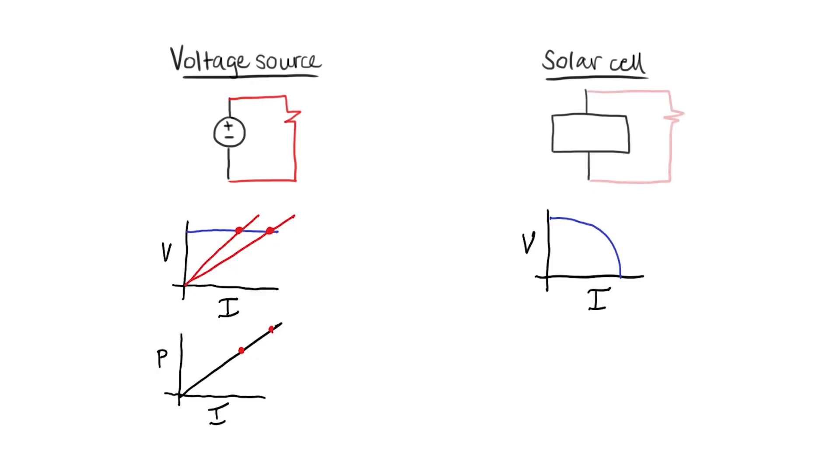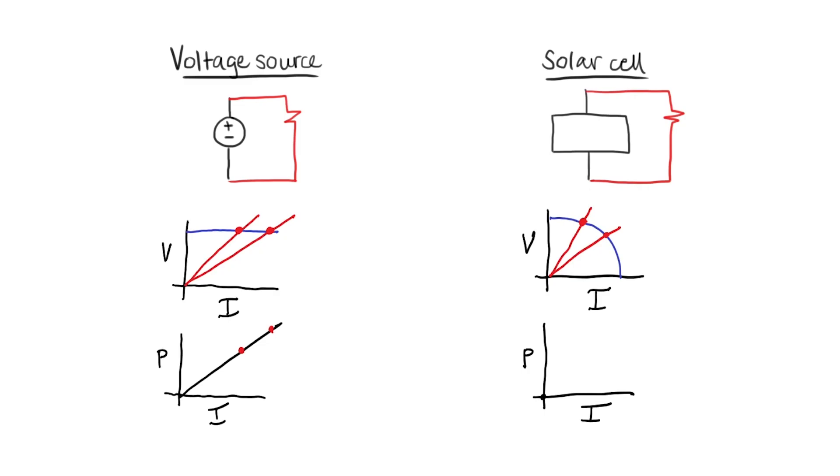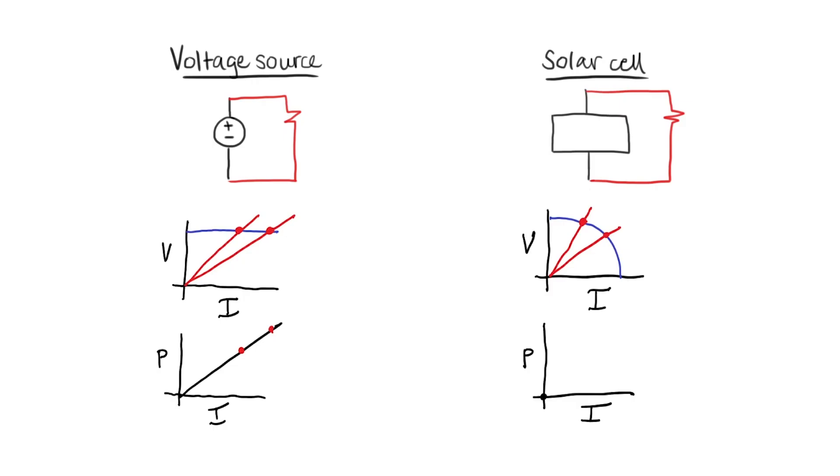Let's now consider the situation in a solar cell. If I hook a resistor up to a solar cell and then change the resistance, then both the voltage will change and the current will change. If I then plot the power versus current for a solar cell, I'll have an interesting situation. Because when the current is nearly zero, the power supplied by the cell is also zero. No current's flowing, no power's flowing. But when the current is high, the voltage is decreased to zero. Since voltage equals zero, the power is also zero.